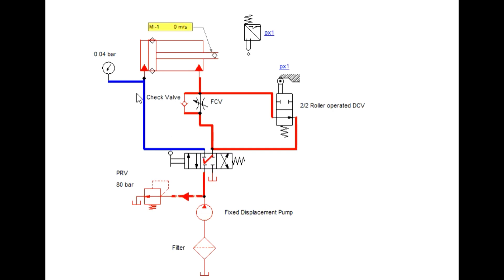It also has a pressure gauge to check the pressure in the system, double acting cylinder, flow control valve along with check valve, and a 2 by 2 roller operated direction control valve which is normally open.